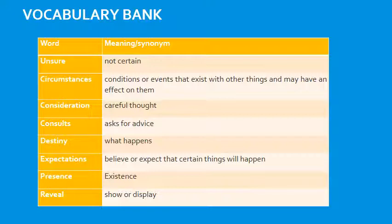You can find this table with the related exercises on the drive in its vocabulary worksheet for semester three. There is also a related answer key in the worksheet answers or solutions file on the drive. Unsure means not certain. Circumstances means conditions or events that exist with other things and may have an effect on them. Consideration means careful thought. Consults means asks for advice. Destiny means what happens or what is meant to happen. Expectations means believing certain things will happen. Presence means existence. Reveal means to show or display.